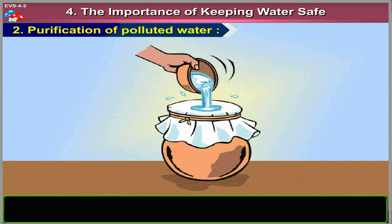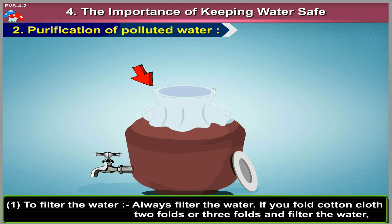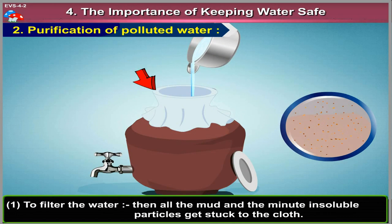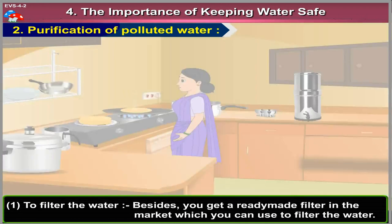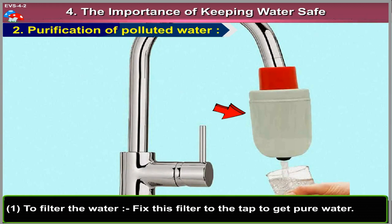Purification of Polluted Water. Method 1: To Filter the Water. Always filter the water — if you fold cotton cloth 2 or 3 folds and filter the water, then all the mud and minute insoluble particles get stuck to the cloth. Besides, you can get a ready-made filter in the market. Fix this filter to the tap to get pure water.